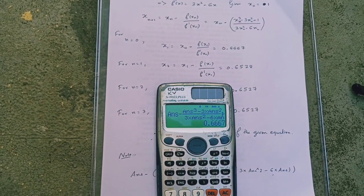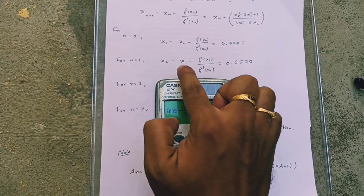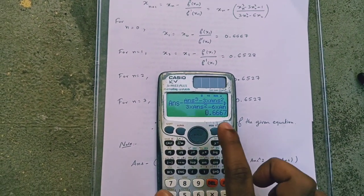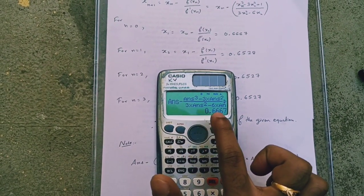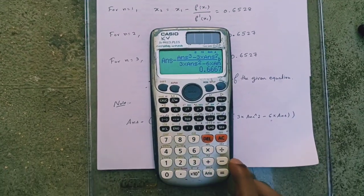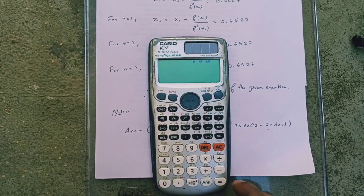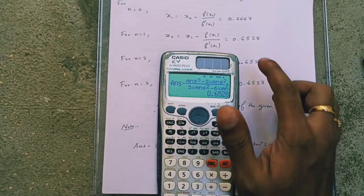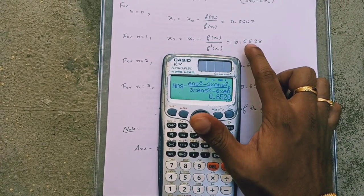For the next approximation x2 is x1 minus f of x1 by f dash of x1. Now, the value of answer is 0.6667. If I press equal, we get the second approximation that is 0.6528.